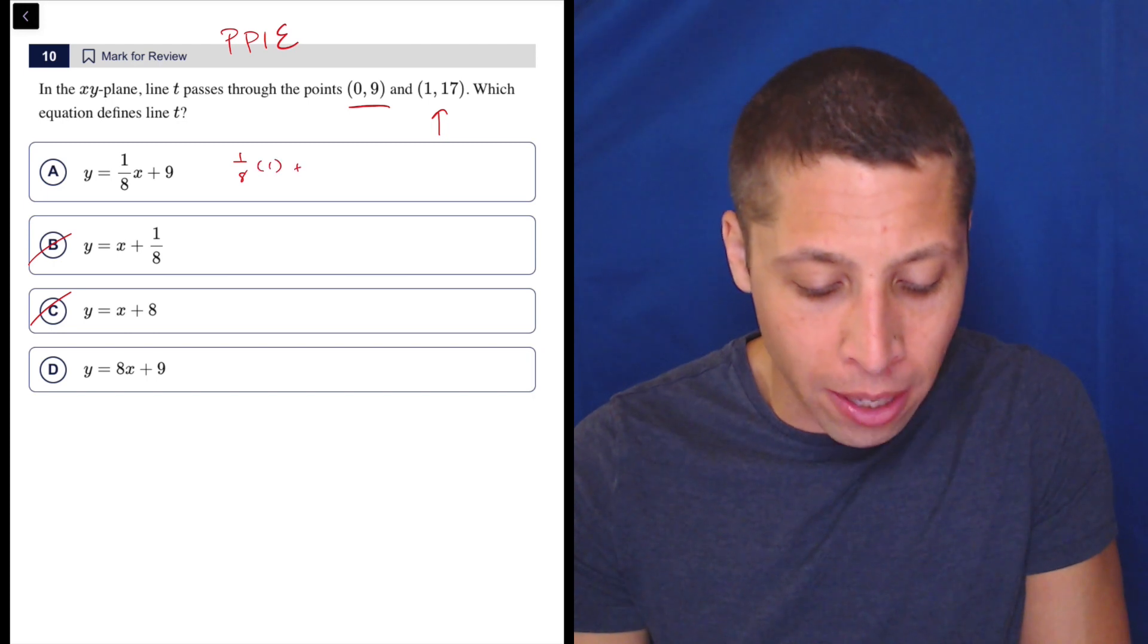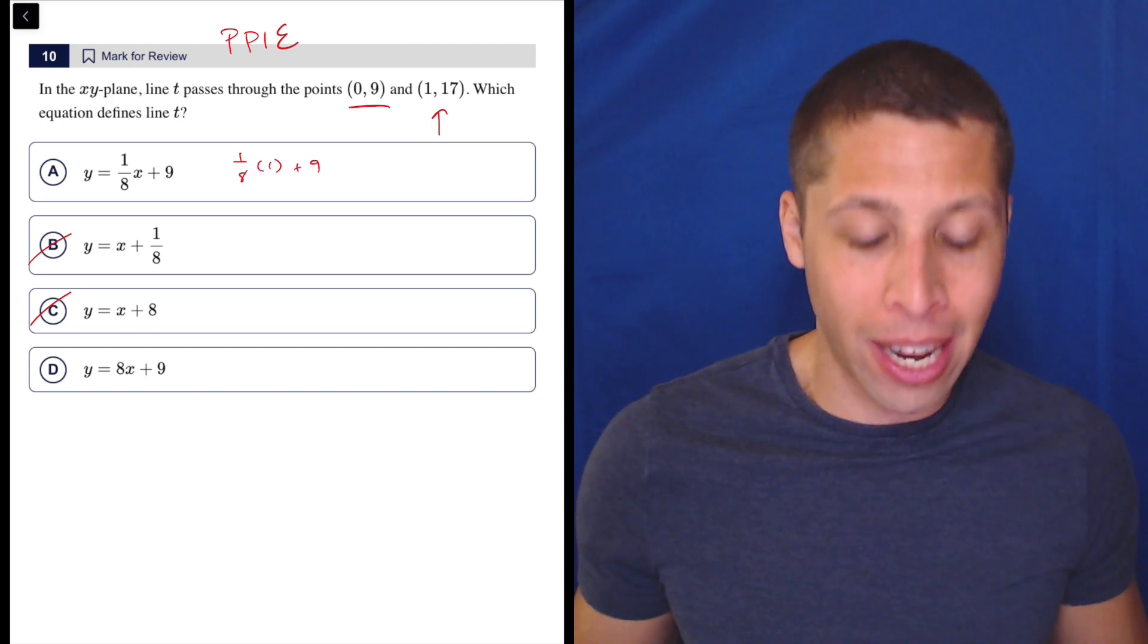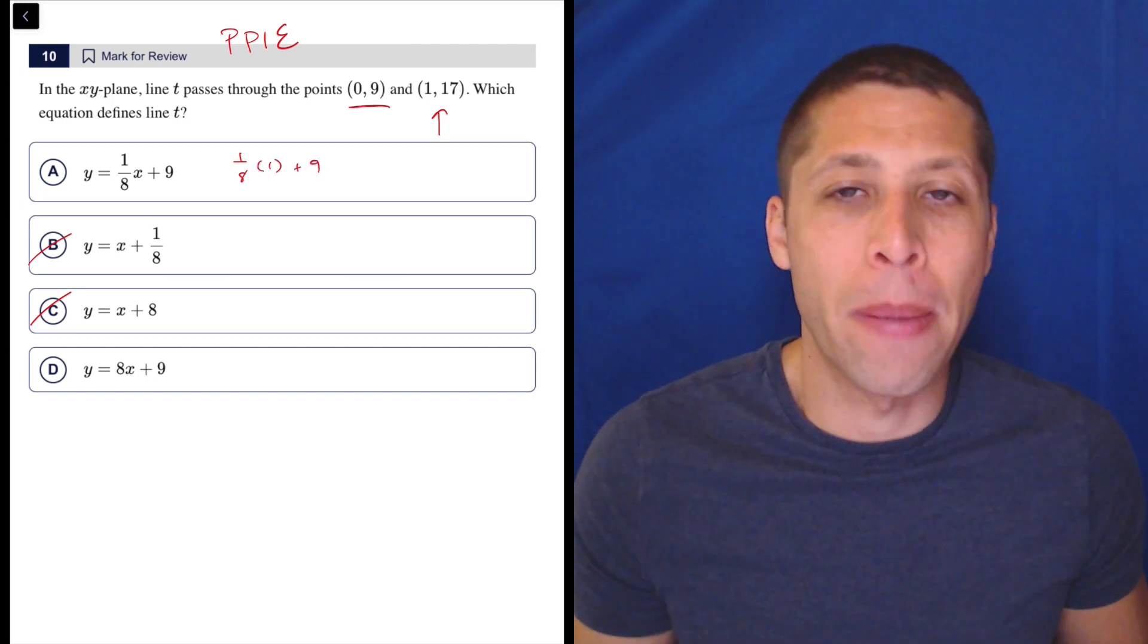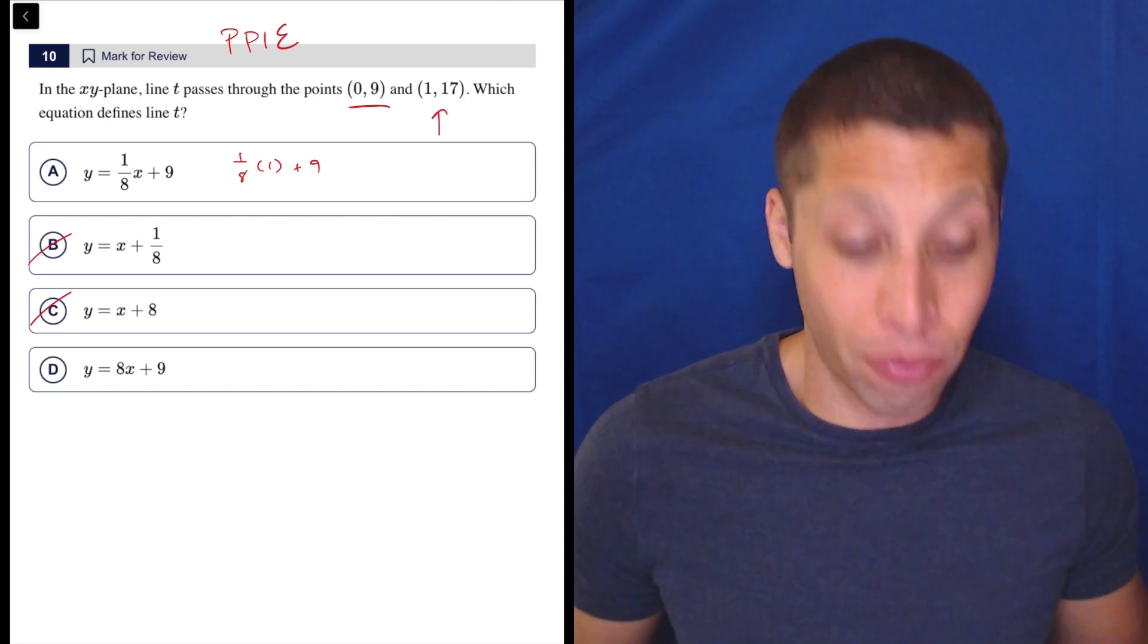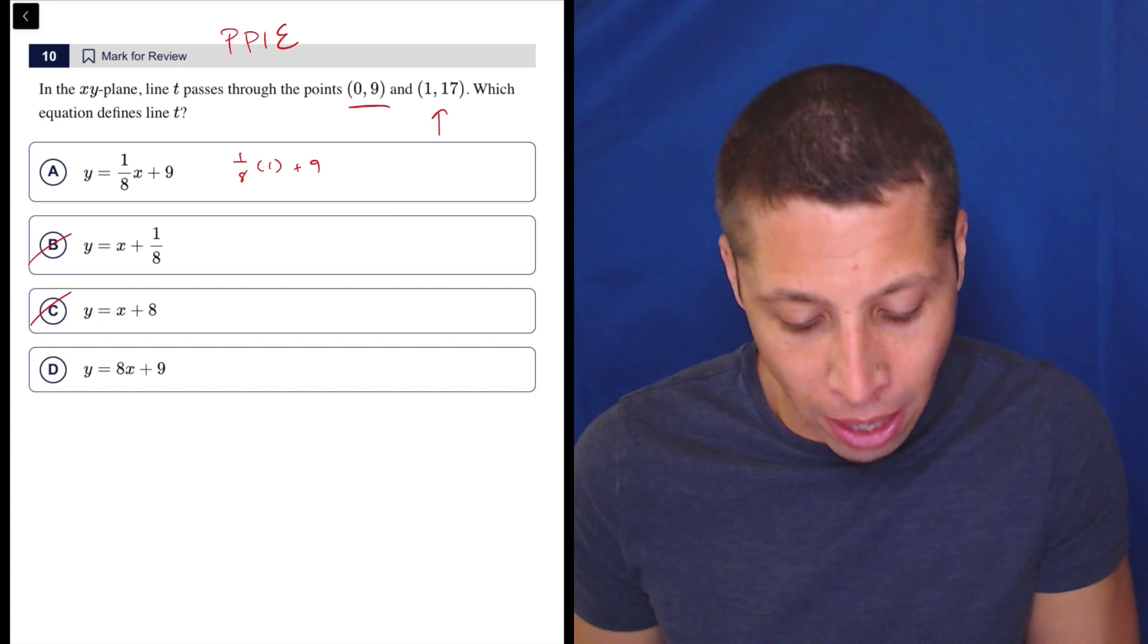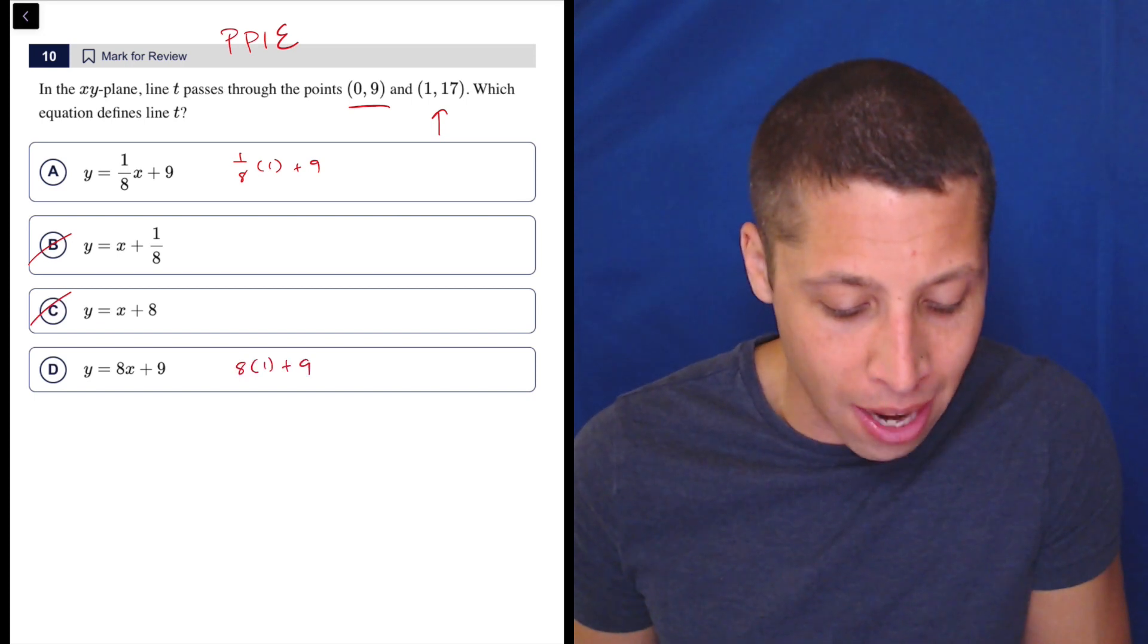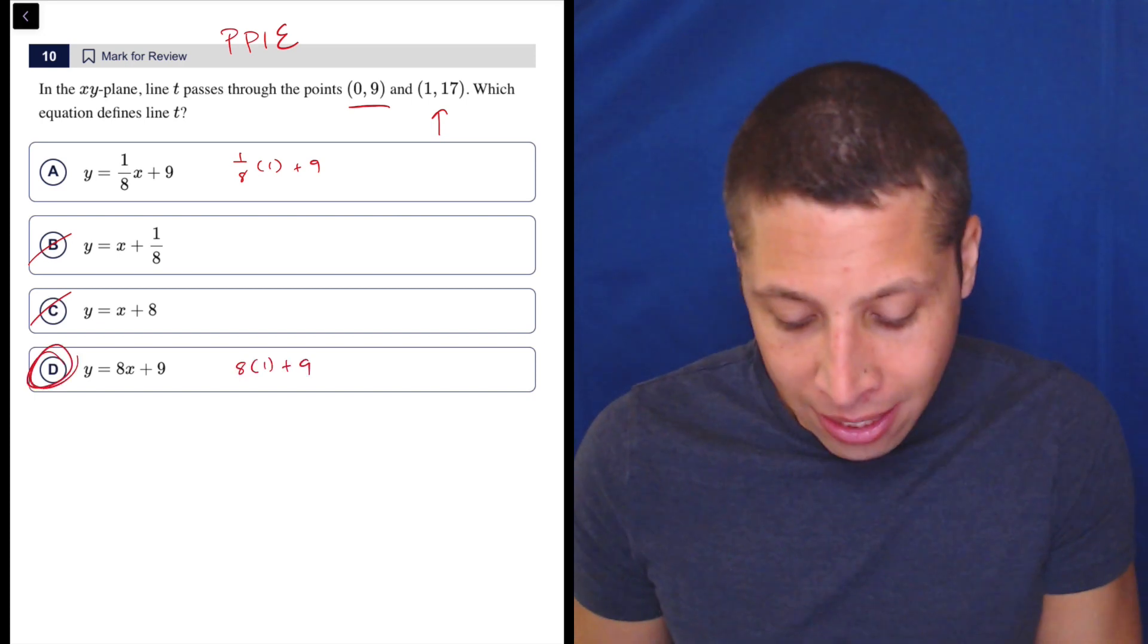Well, 1/8 of 1 plus 9. I wouldn't even need to write this down. I can just, in my head, realize that's going to be a messy number, right? 1/8 times 1 is still 1/8. So I'm not going to get rid of the fraction and get to 17. So then, okay, 8 times 1 plus 9. Yeah, 8 plus 9 is 17. Done.